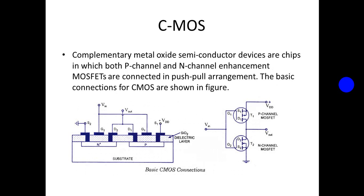CMOS devices are chips in which both P-channel and N-channel enhancement MOSFETs are connected in a push-pull arrangement. The basic connections for CMOS are shown in the figure. In this circuit, two MOSFETs — a P-channel MOSFET and an N-channel MOSFET — are connected in series, so that the source of the P-channel device is connected to a positive voltage supply VDD and the source of the N-channel device is connected to ground. Gates of both devices are connected together as a common input, and drain terminals of both devices are connected together as a common output.